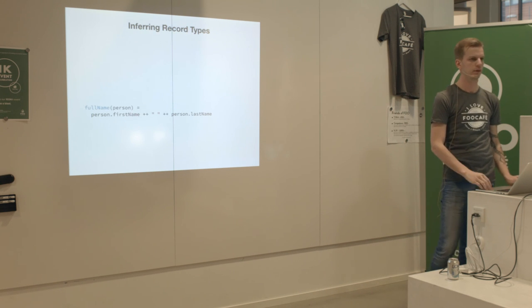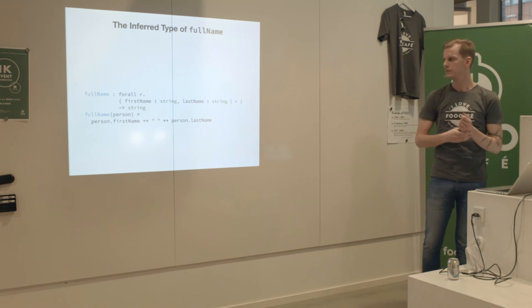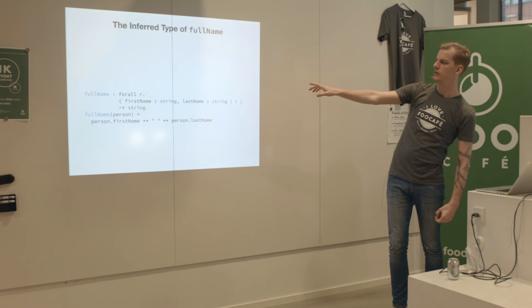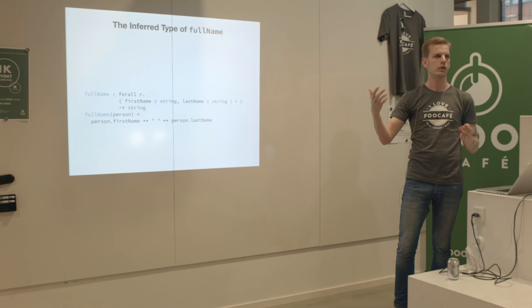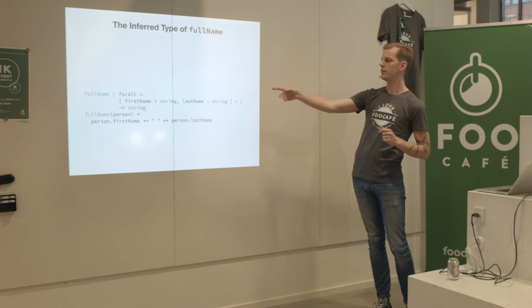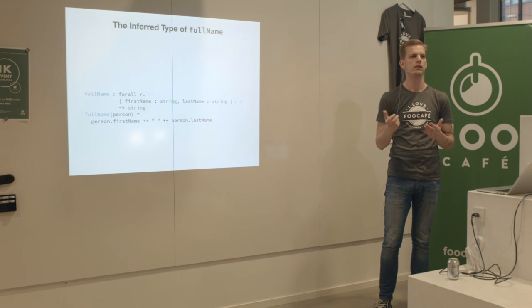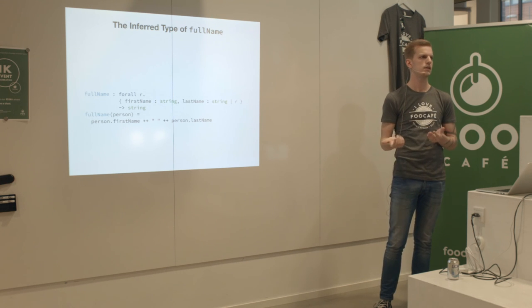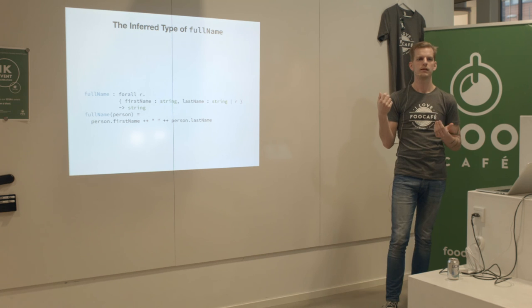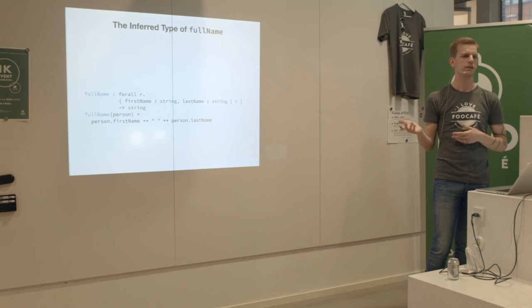What's the type of fullName? It uses 'forall' to introduce a row variable called r. We say we take a record that has 'firstName' and 'lastName' plus some other fields bound to r. Those could be whatever - no fields at all, or more fields like the age field. Then we return a string. This function is polymorphic in regards to what fields the record has. This is just the first step for the extensible records feature.